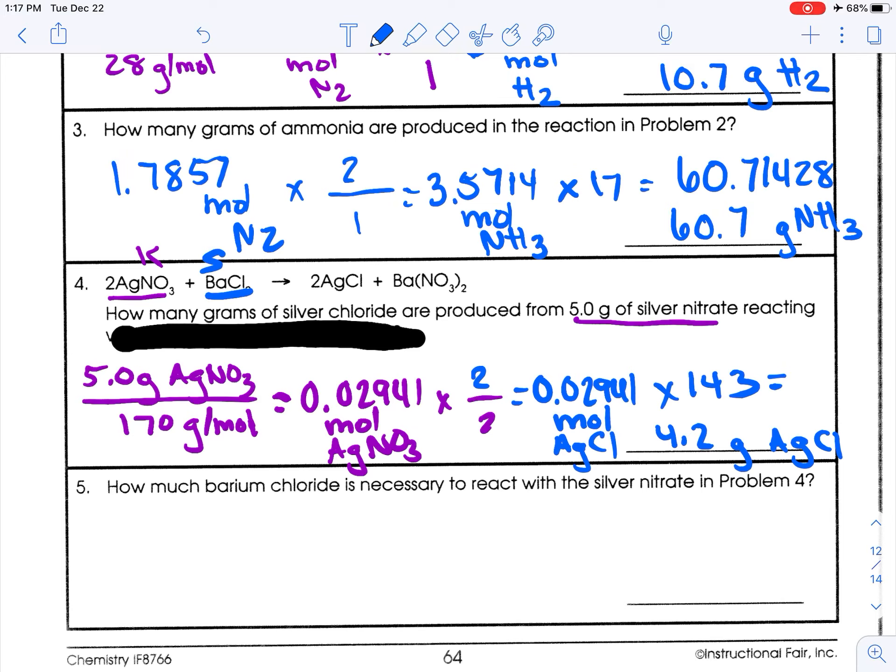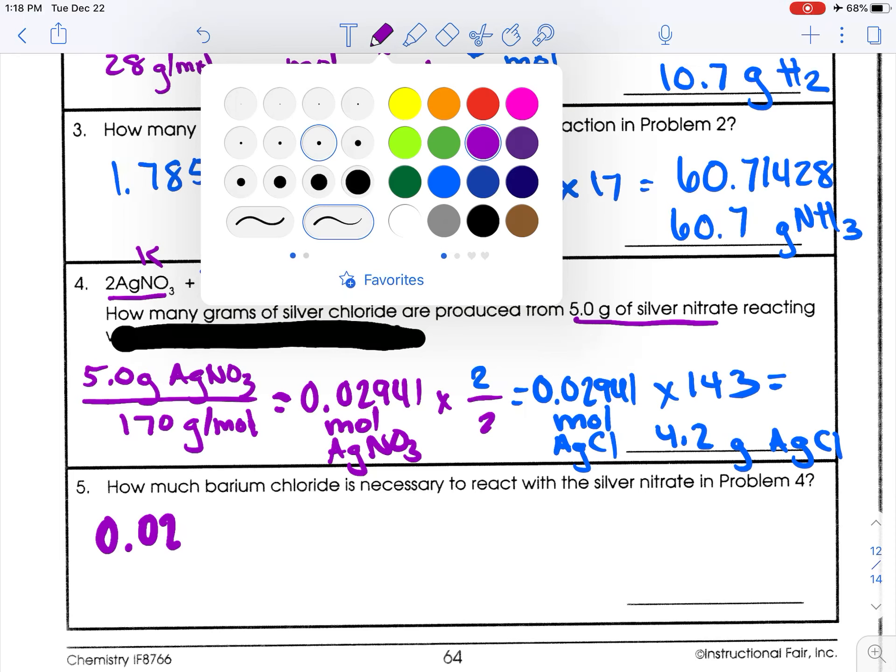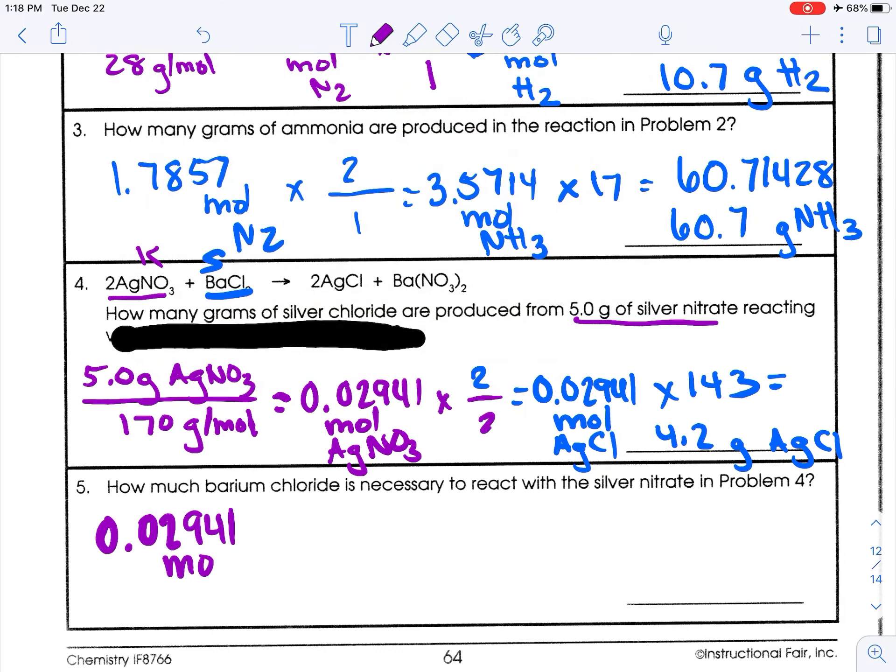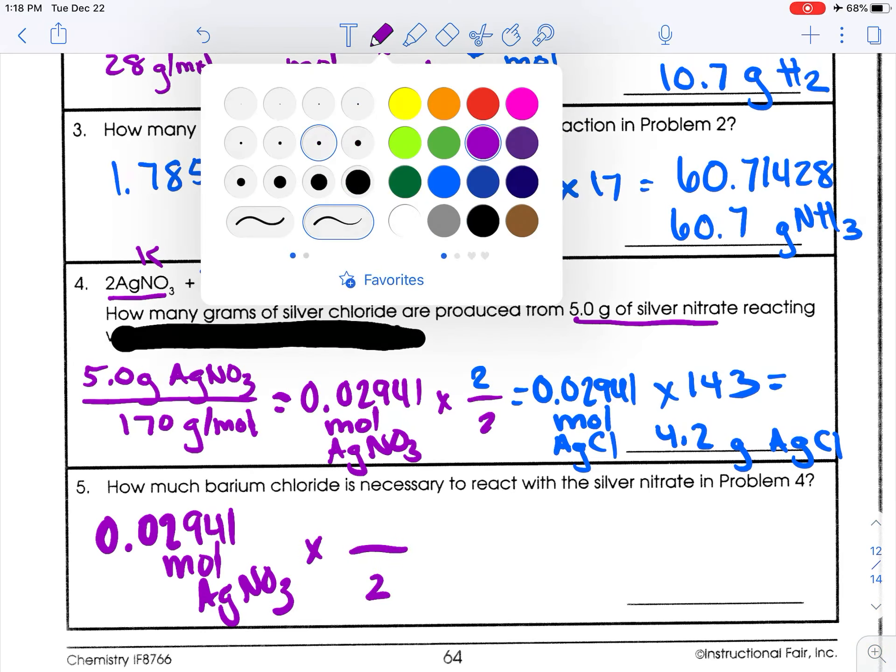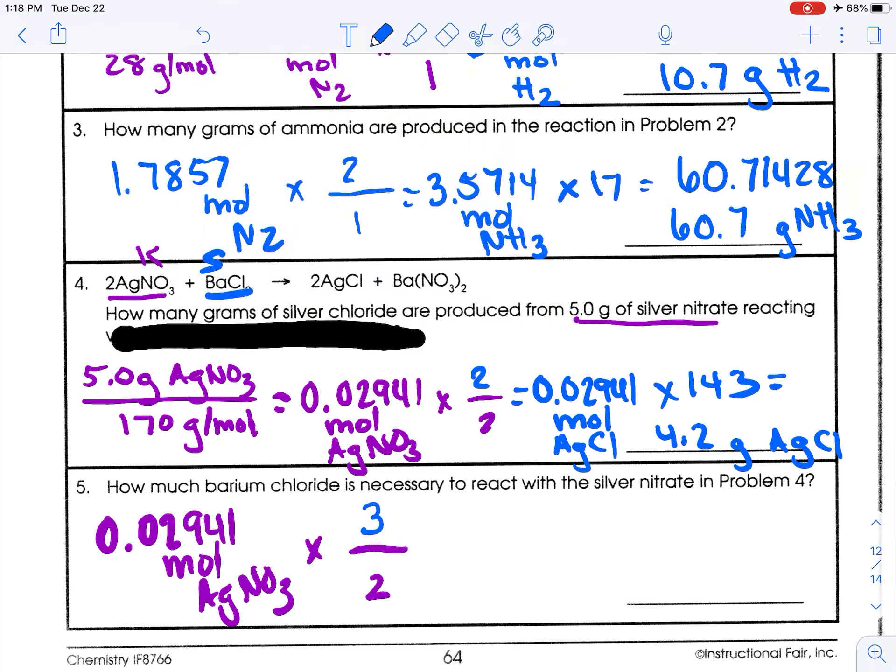But I'm going to have that same given because I'd have the same given. I'd have the 0.02, 2, 9, 4, 1 moles of the silver nitrate. I don't need to do that math again. I have it. And this time, my seek is a 3. So 3 over 2. So let me do that math. Times 3 divided by 2. 0, 4, 4, 1, 7, 1, 7. Who cares? Moles of barium chloride.